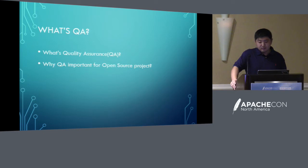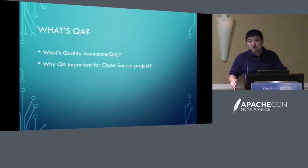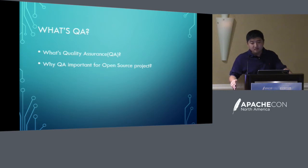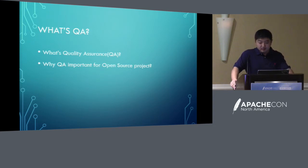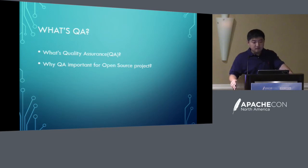For open source projects, all the source code is available for all contributors to develop, write, or debug for rapid evolution. So in most open source projects, they didn't do much about QA upstream. Sometimes the upstream code base may not be very stable or easy for users to use. So actually, a proper QA process will make the open source project more stable and support rapid development.